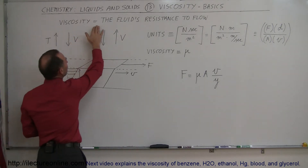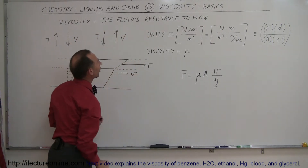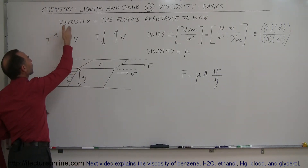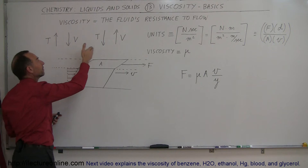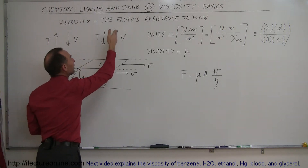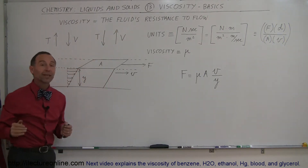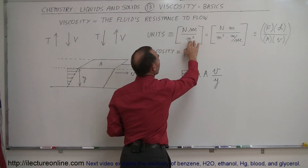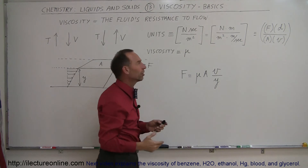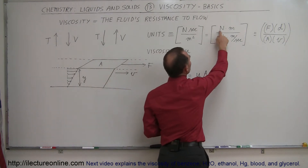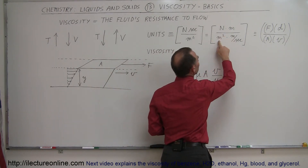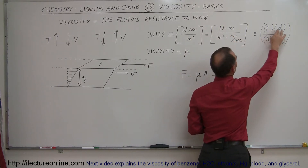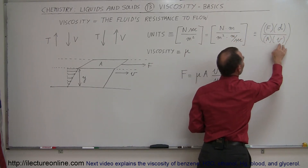Viscosity by definition is a fluid's resistance to flow. Typically, as the temperature of the fluid goes up, the viscosity tends to go down, and as the temperature goes down, the viscosity tends to go up. The units of viscosity are newtons times seconds divided by meters squared, which can be rearranged as force times distance divided by area times velocity.